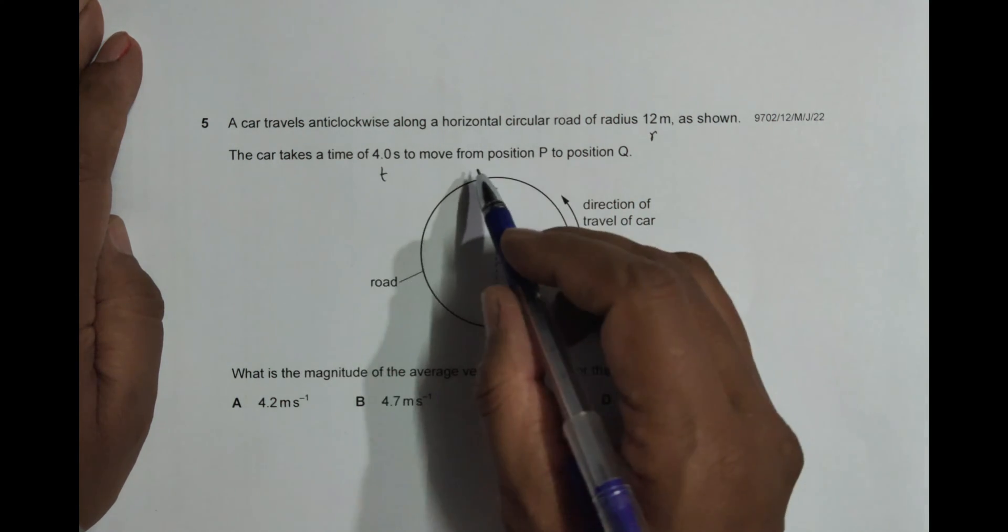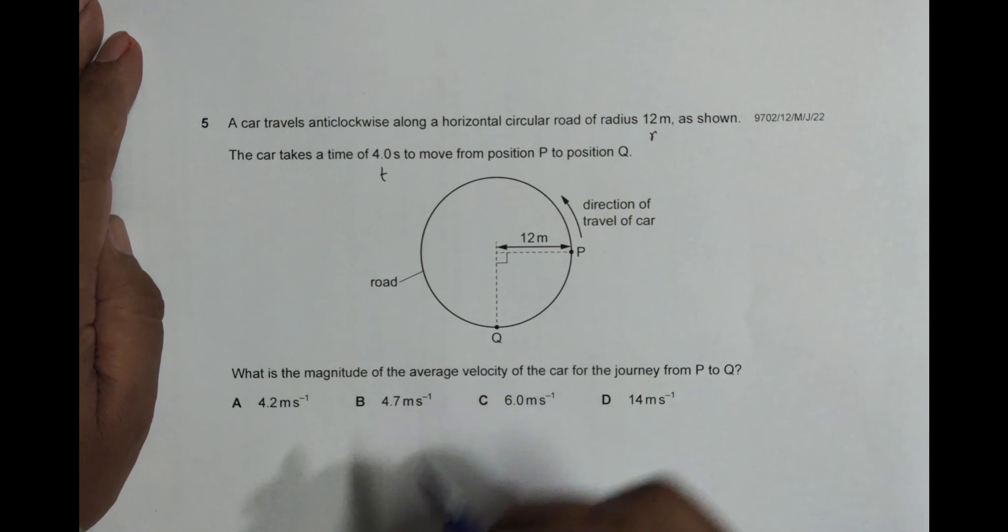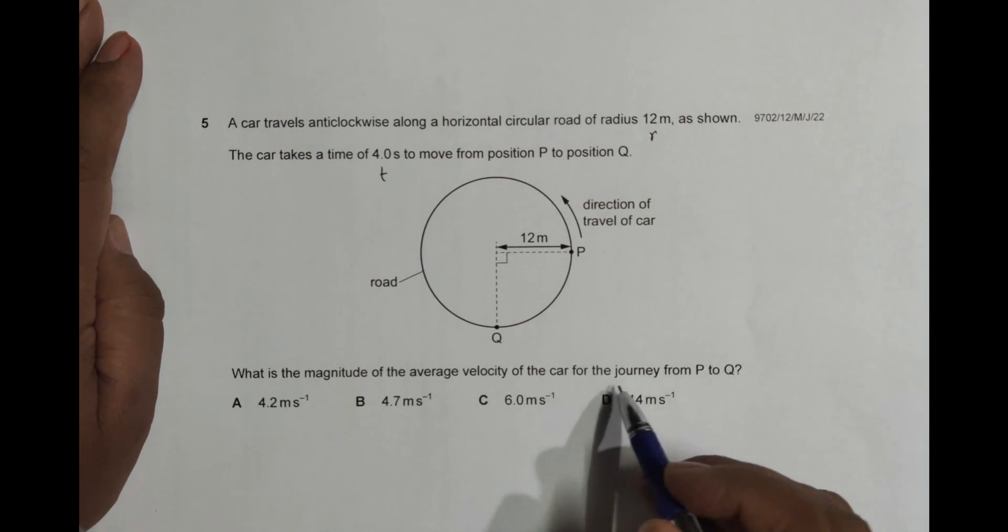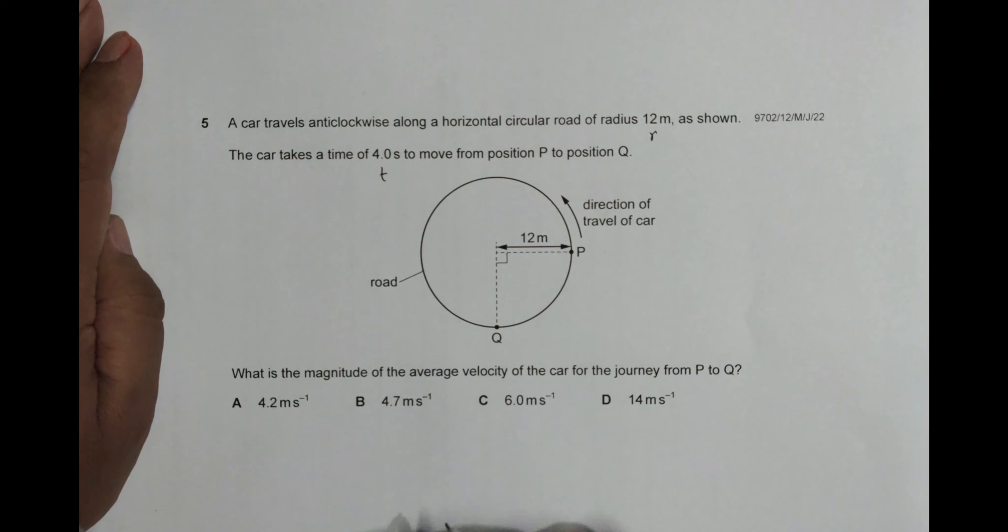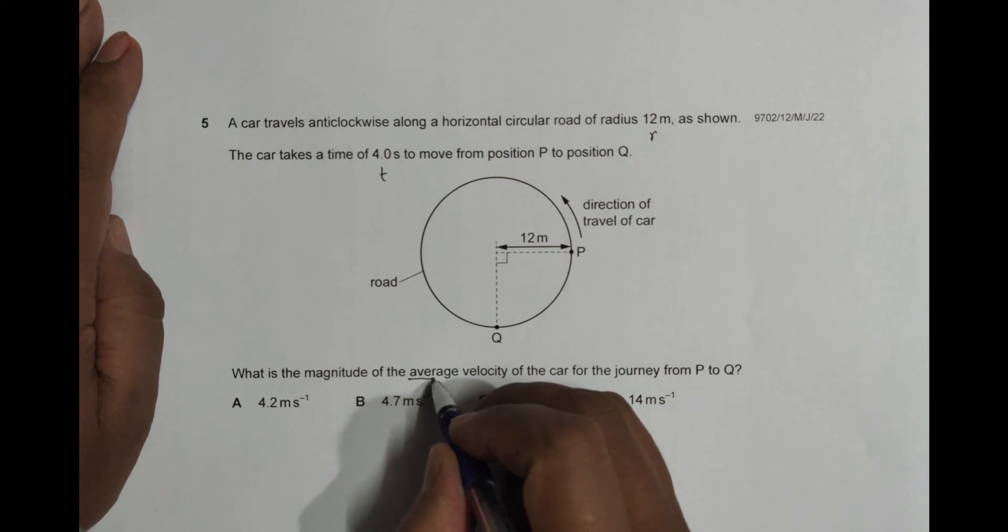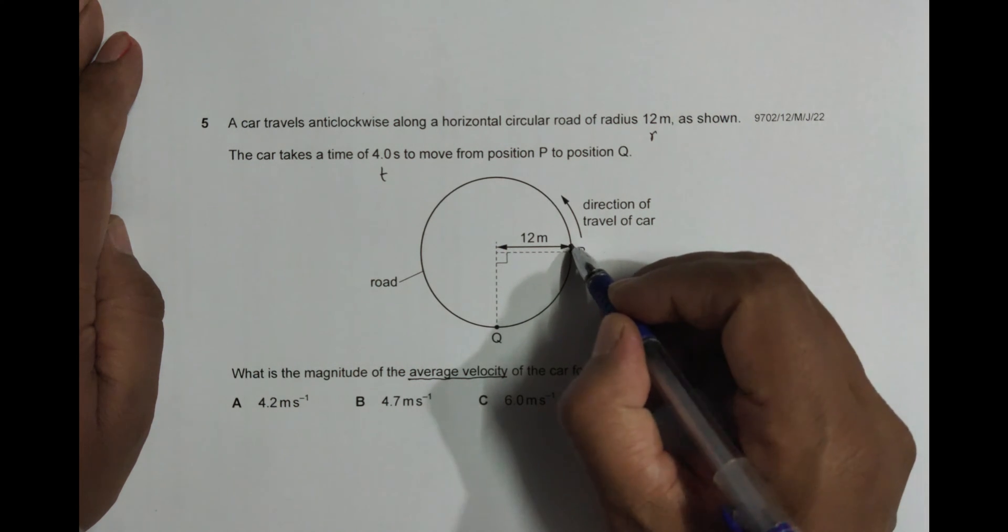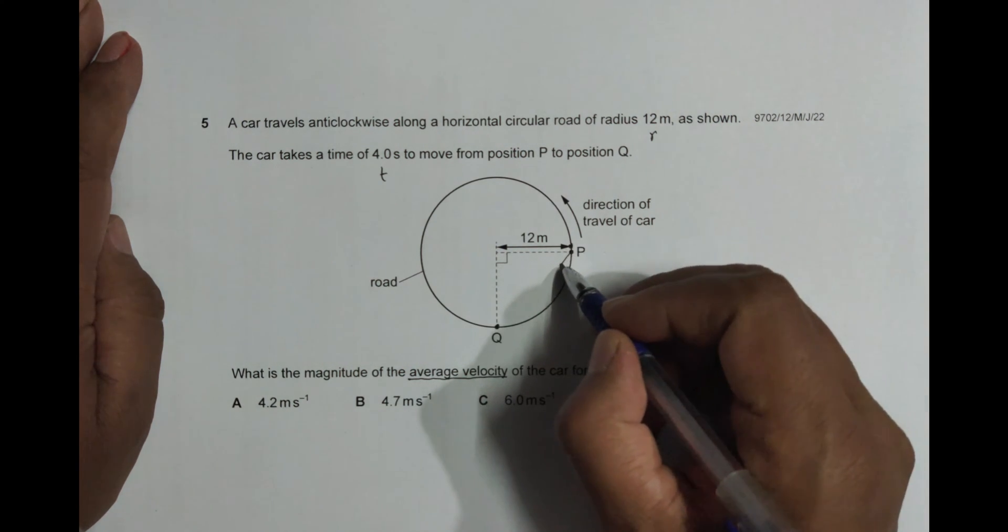It is time equal to this much to move from position P to Q. What's the magnitude of the average velocity of the car for the journey from P to Q? Average velocity means that we have to go for the displacement of the body. So from here to here, the displacement is just this much.